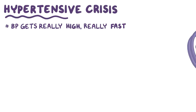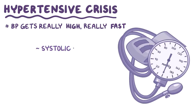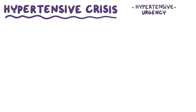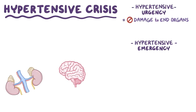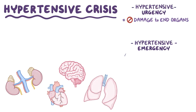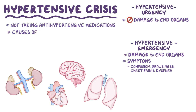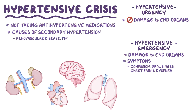If blood pressure gets really high really fast, it's called a hypertensive crisis, where either the systolic pressure is greater than 180 mmHg or the diastolic pressure is greater than 120 mmHg. Hypertensive crisis can be further split into hypertensive urgency and hypertensive emergency. With hypertensive urgency, there hasn't yet been damage to end organs like the brain, kidneys, heart and lungs. In hypertensive emergency, there is damage to end organs and patients have symptoms like confusion, drowsiness, chest pain and dyspnea. The most common cause of hypertensive crisis is not taking antihypertensive medications, but it can also be due to causes of secondary hypertension like renal vascular disease, pheochromocytoma, hyperaldosteronism, and erythropoietin intake.